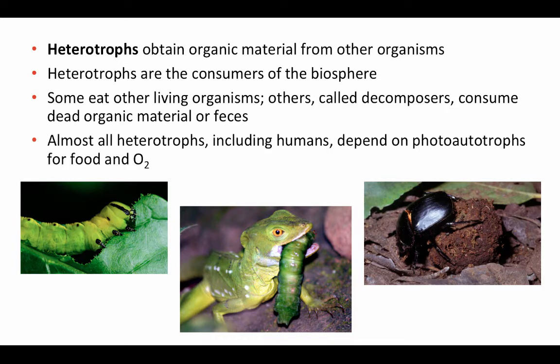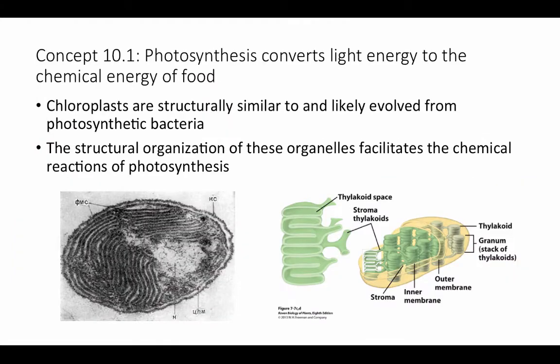Almost all heterotrophs, including humans, depend on photo-autotrophs for food and oxygen. All of the carbohydrates, glucose, and oxygen that we use in our metabolic processes come from the photosynthetic activity of these photo-autotrophs. So what is photosynthesis? Photosynthesis is basically converting light energy into chemical energy — the light energy from the sun into the chemical energy of carbohydrates or some other energy source.